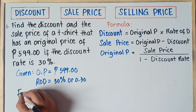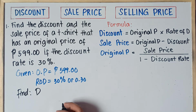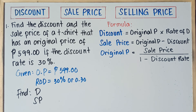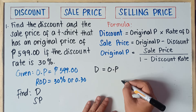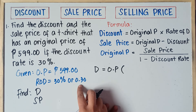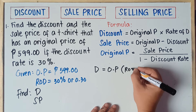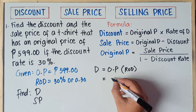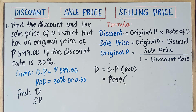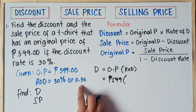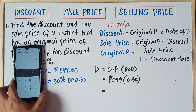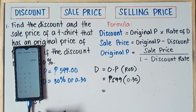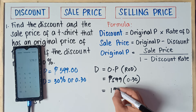We're told to find the discount and the sale price. To find the discount, our formula is: Discount (D) = Original Price × Rate of Discount. So Original Price is 599, times the Rate of Discount, which is 0.30. Using your calculator, 599 times 0.30 — the answer is 179.70 pesos. That is the discount.